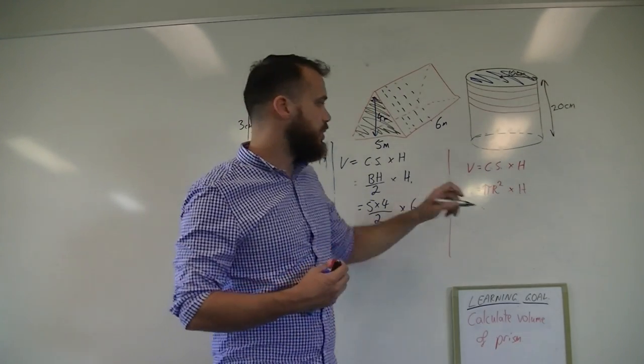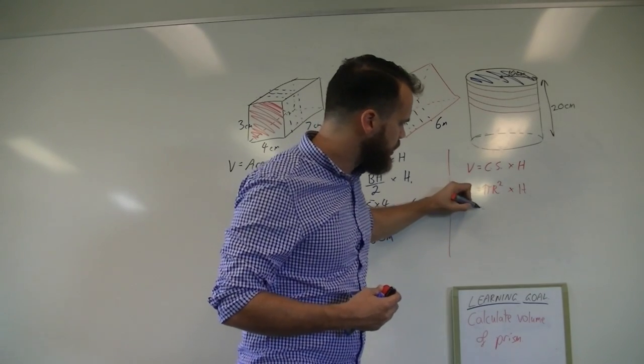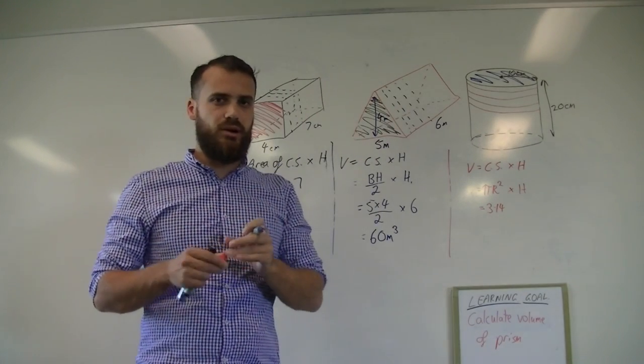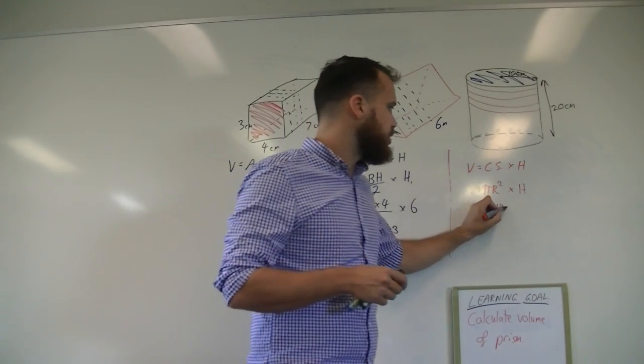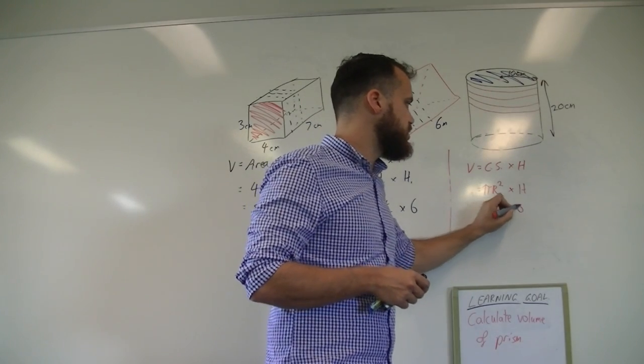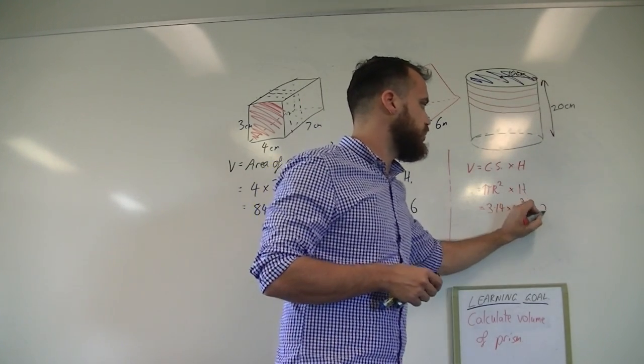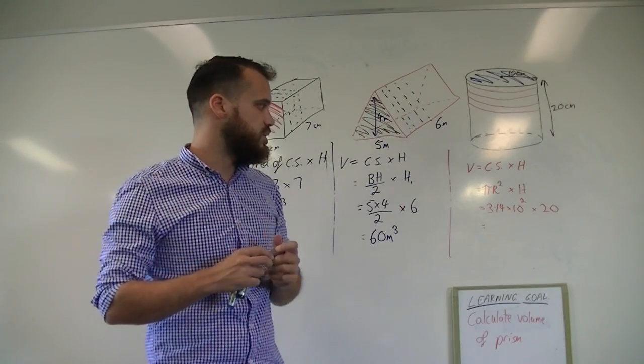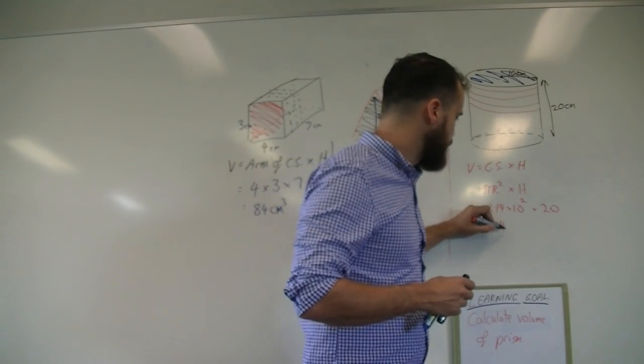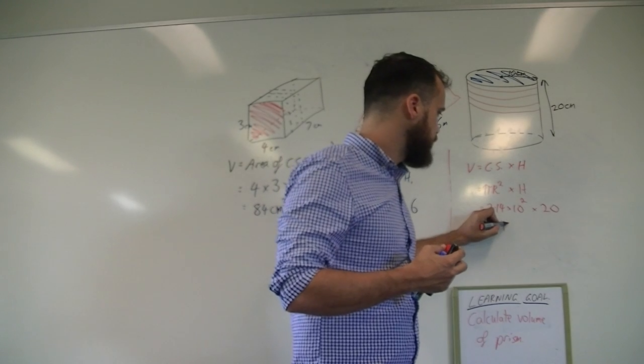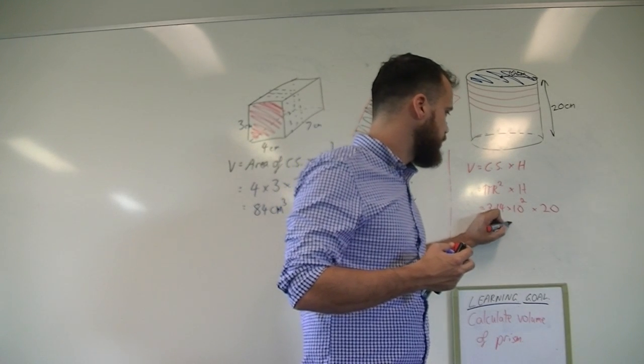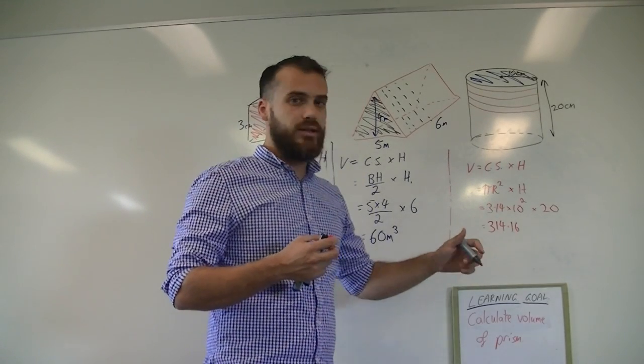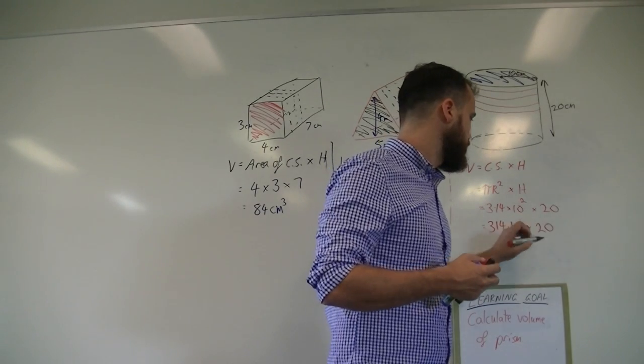Now, that's going to be pi. Might make our life easy here. Three point one four. You should use the pi button on your calculator when you do this. Times radius squared, so times ten squared, times height, which is twenty. Three point one four times ten squared, that's going to be three hundred and fourteen. Three hundred and fourteen point one six, approximately. You can do that on the calculator, and then multiply that by twenty.